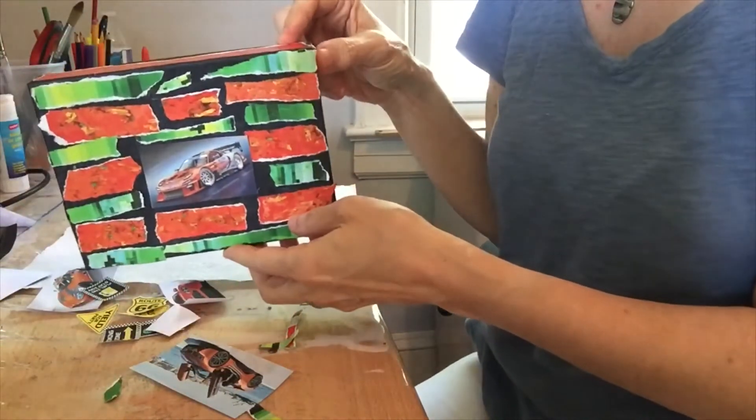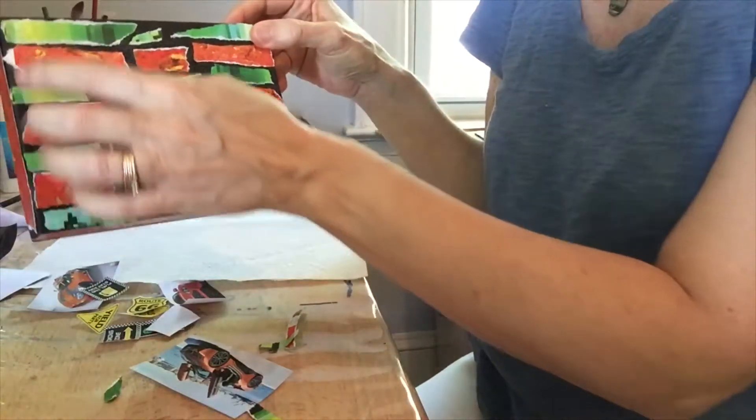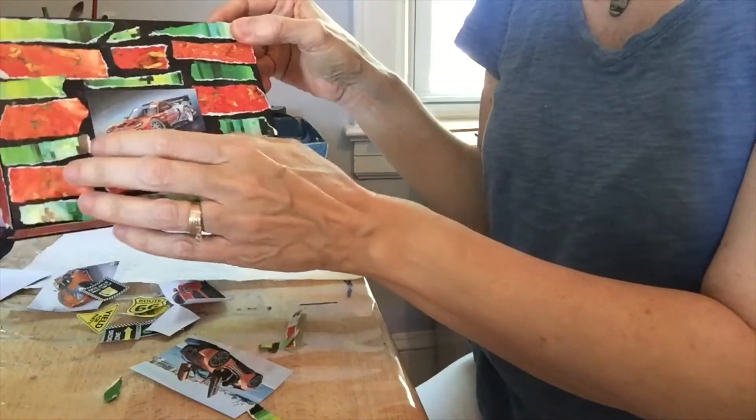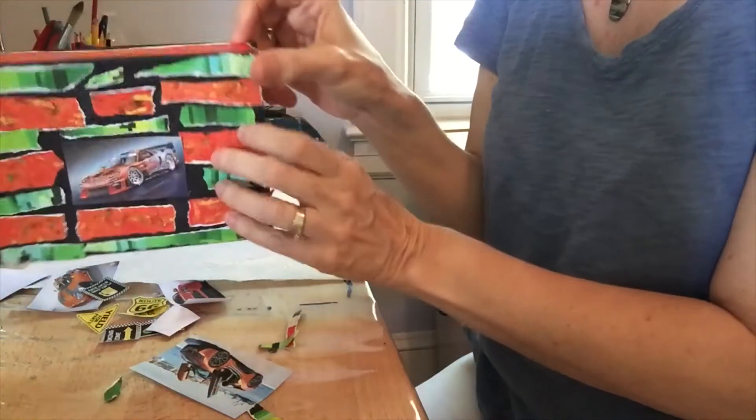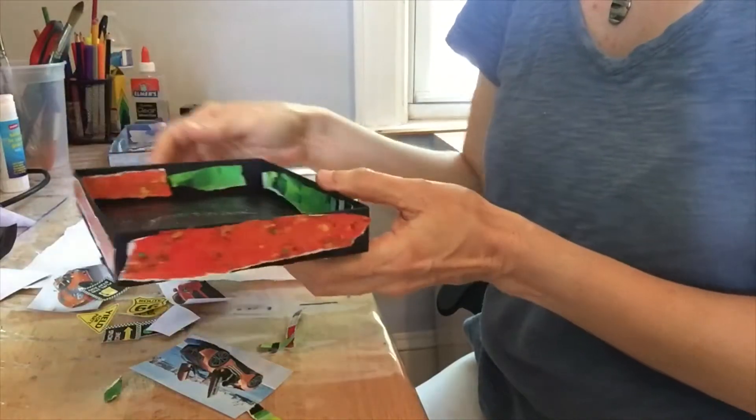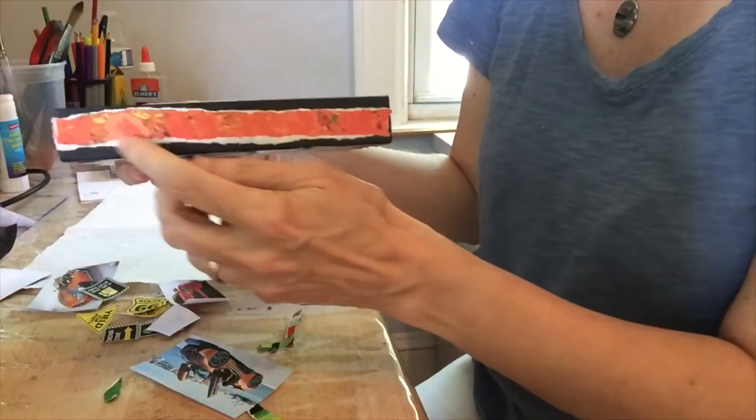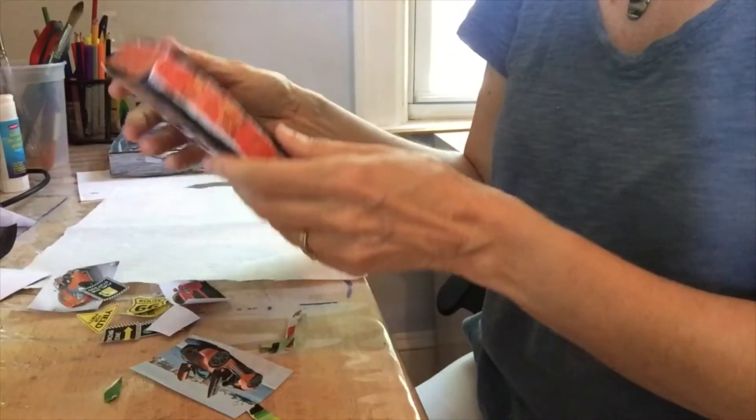So the theme for this one is cars, and I ripped some paper and I've covered some of the back of it because this video will just take too long if I don't. I like ripping paper because you get this really cool white torn edge, and I really like that.